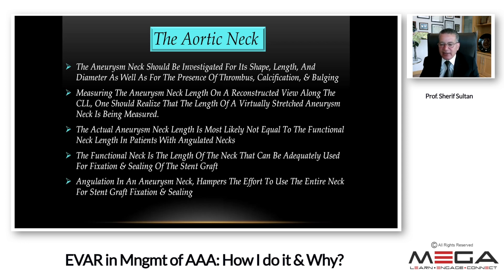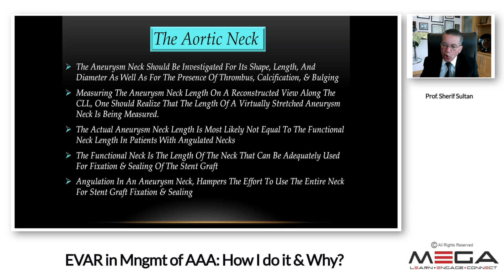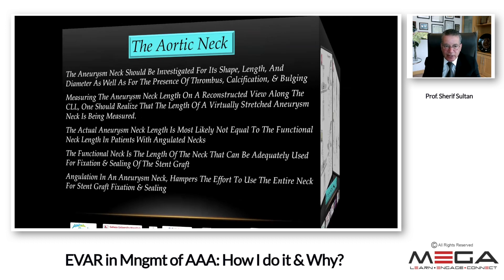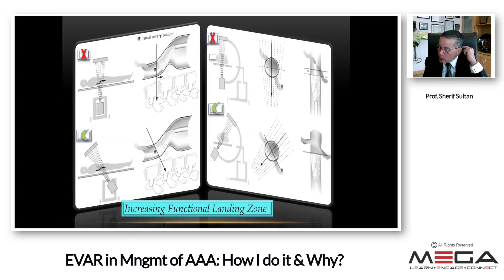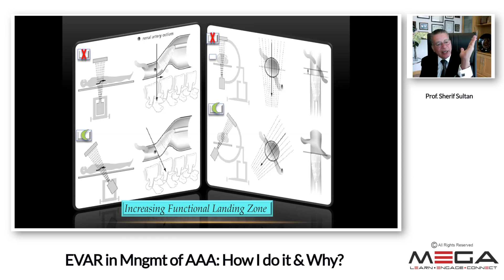The functional neck is the length that can be adequately used for fixation and sealing of the stent graft. Be wary of drug reps or clinical specialists trying to sell a graft for a case where it isn't appropriate. Inexperienced workstation operators may report measurements that don't reflect reality. Always look at the images yourself — you are the one carrying the can. Angulation in the aneurysm neck hampers the effort to use the entire neck for stent graft fixation and sealing. To increase the functional landing zone, you must cancel the parallax by using a craniocaudal angulation rather than a straight AP view.